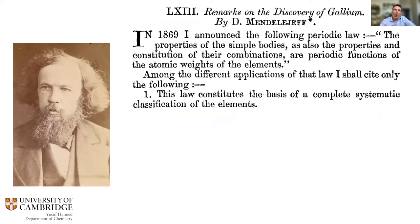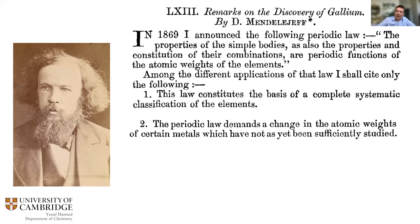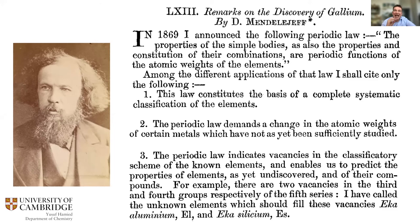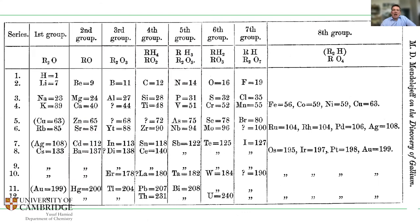What did Mendeleev have to say about this new discovery? He pounced on it. In his announcement in English, he said his periodic law was a complete system of classification that corrects some atomic masses and predicts new elements. He called gallium 'eka-aluminium' — eka meaning 'one space below aluminium' in his system — and said gallium met all the predictions he had made.